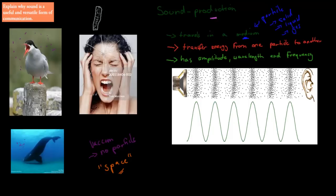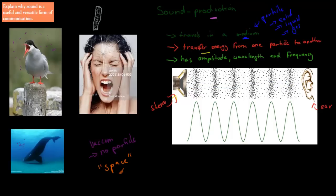Sound travels by transferring energy from one particle to another. For example, here we have a stereo — a loudspeaker — and here we have the ear. The particles closest to the stereo won't actually move to the ear. What they do is vibrate, and they transfer their energy to the particles around them, and those particles transfer energy to the particles around them again. So there's no movement of particles — it's just a transfer of energy. Sound is a movement of energy, not a movement of particles.